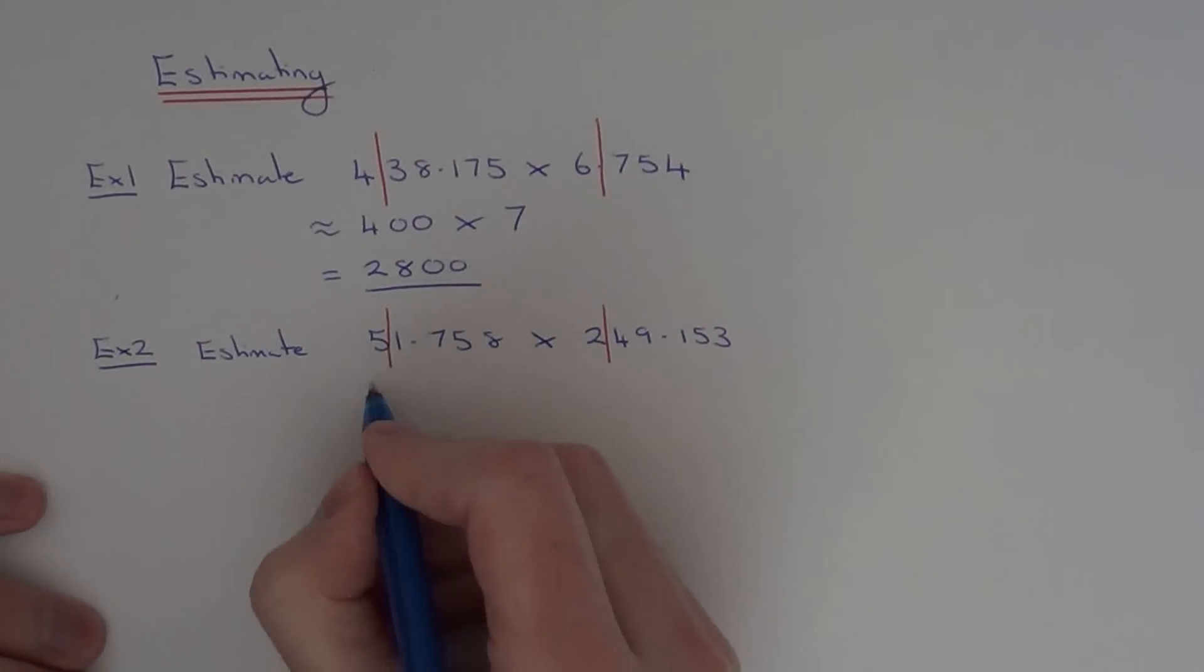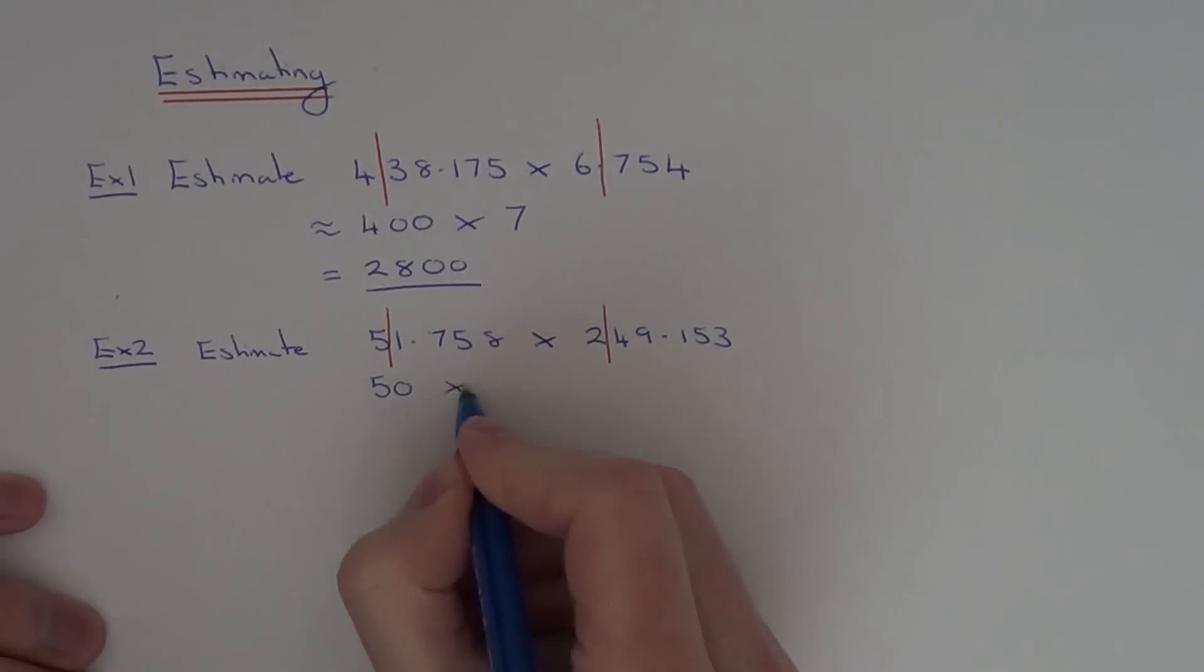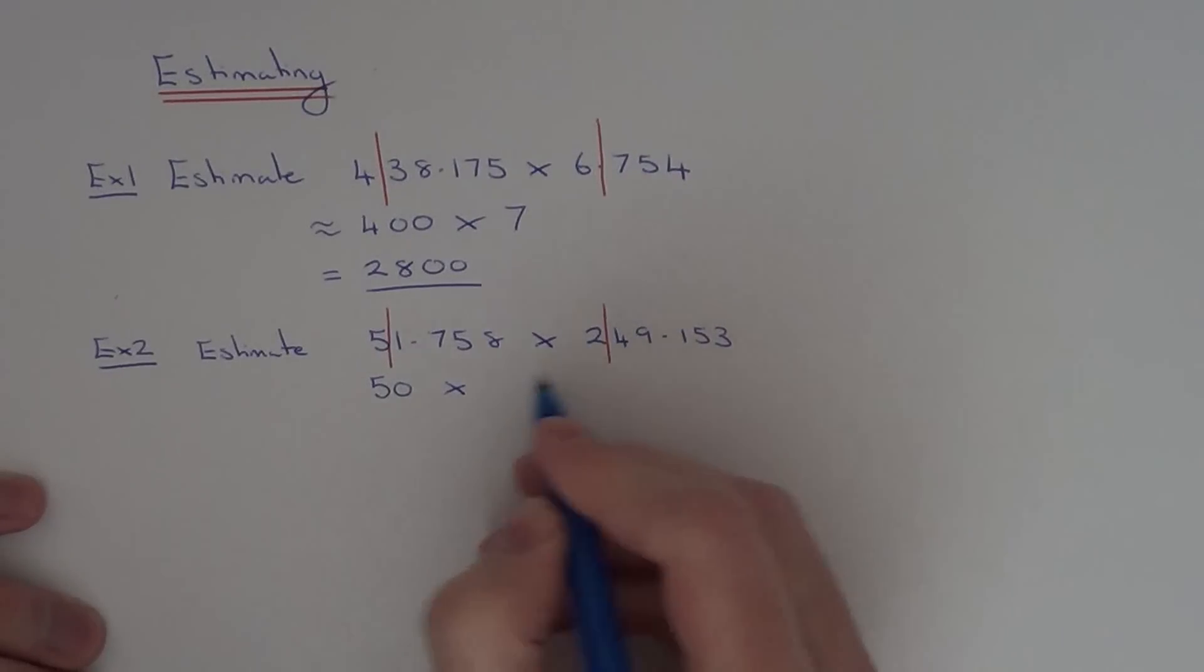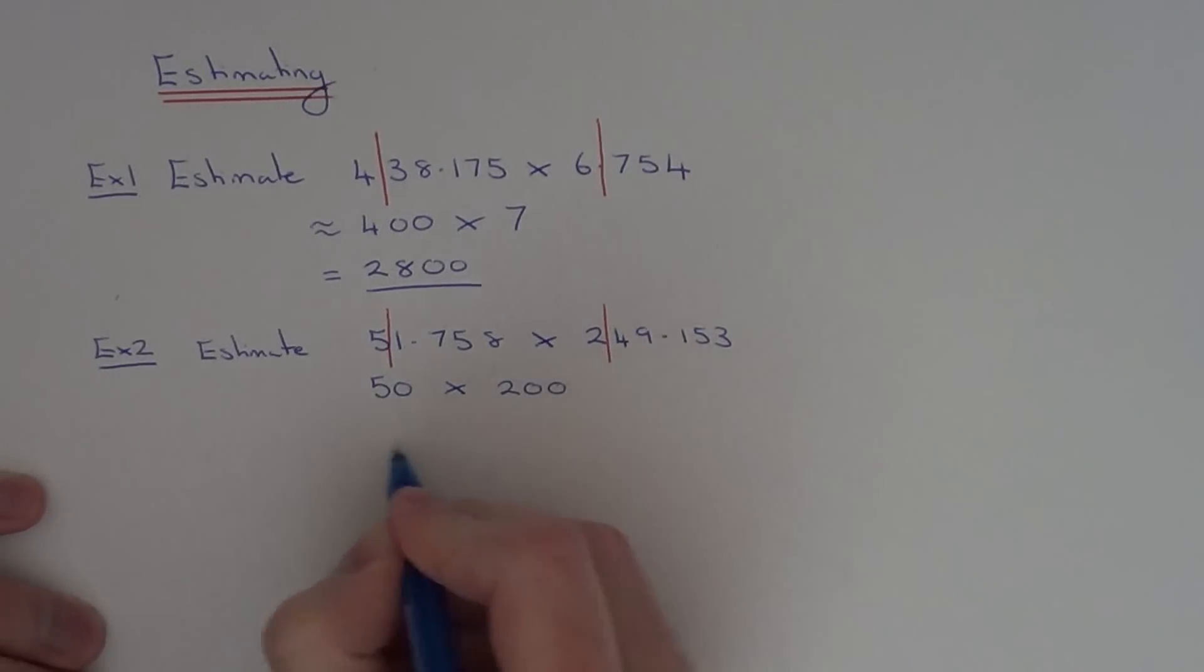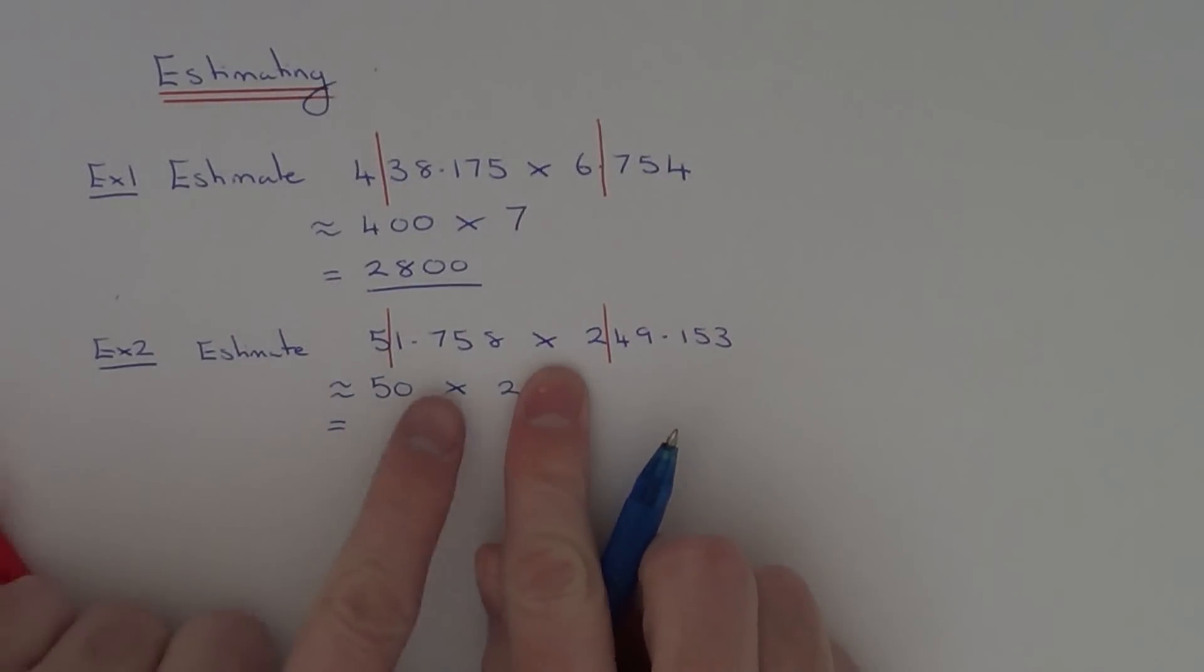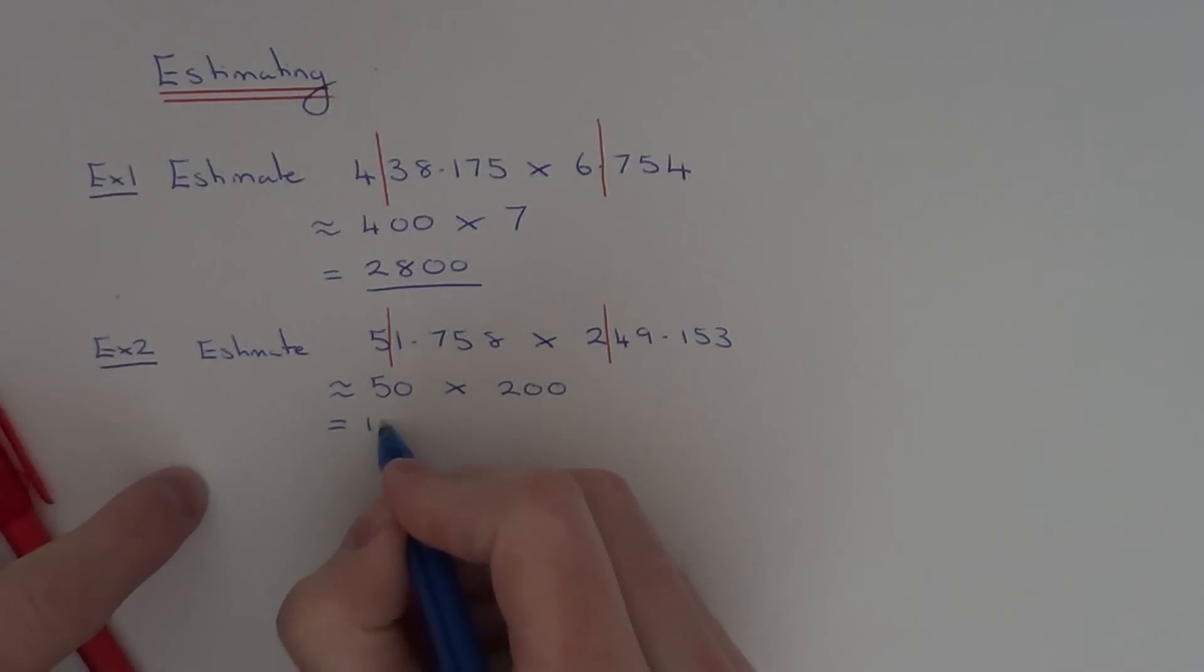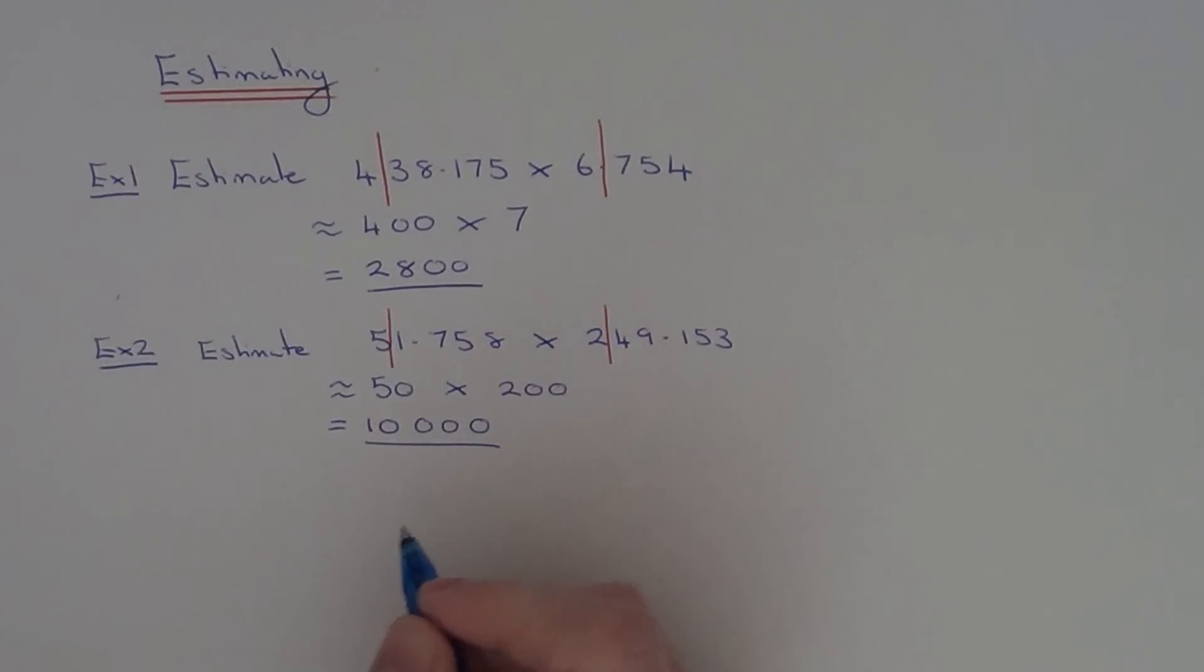So this one will be rounded to 50, and this one will be rounded to 200. So again, we can ignore the zeros. Five times two is 10, and then add on the three zeros which are covered up. So our estimation is 10,000.